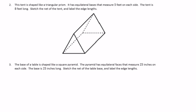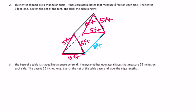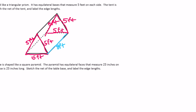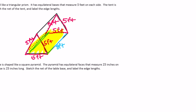Number two: this tent is shaped like a triangular prism. It has equilateral bases that measure five feet on each side. It's a prism — not a pyramid — because it has two triangle bases, one in front and one in back, each measuring five feet on every side. The tent is eight feet long. Sketch the net and label the edge lengths. I'm going to start with the bottom rectangle, which is 8 by 5.